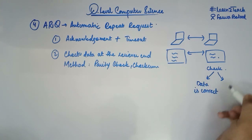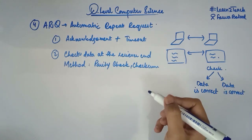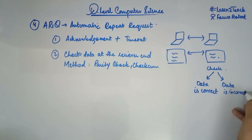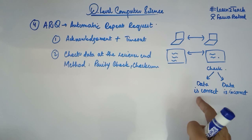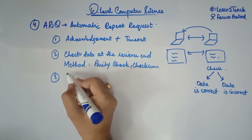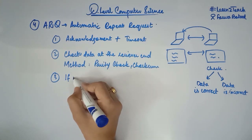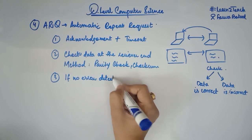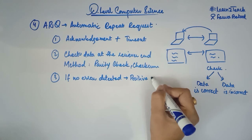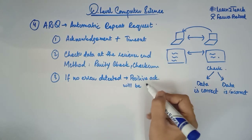After checking, depending upon how this particular machine has checked the data, the data can be correct or incorrect. For example, if the data is correct, then the receiver machine is going to send a positive acknowledgement. So if no error is detected, a positive acknowledgement will be sent by the receiver.